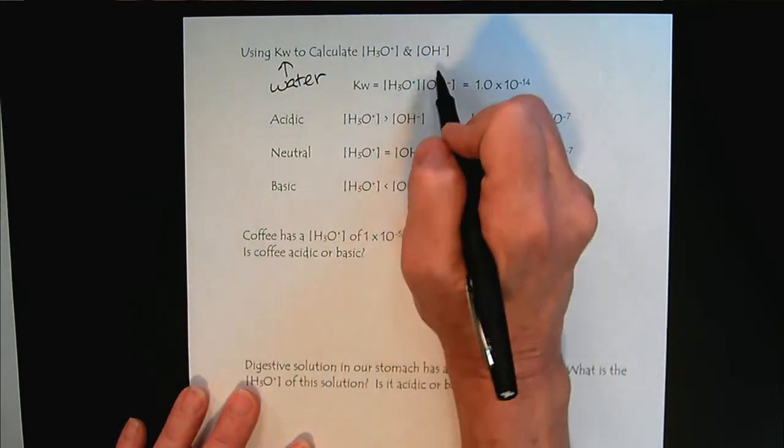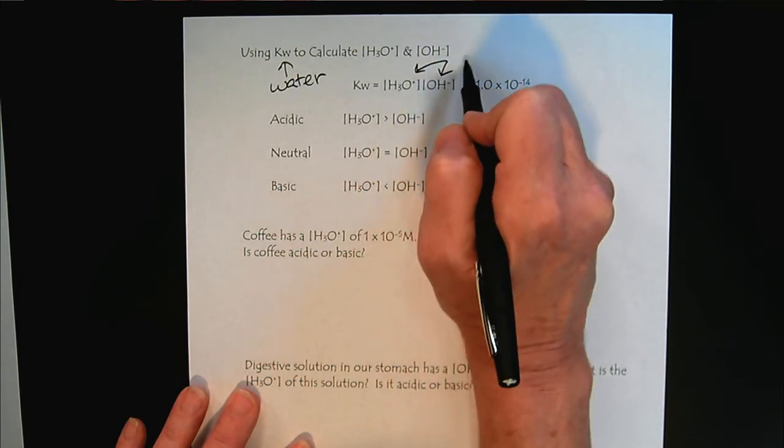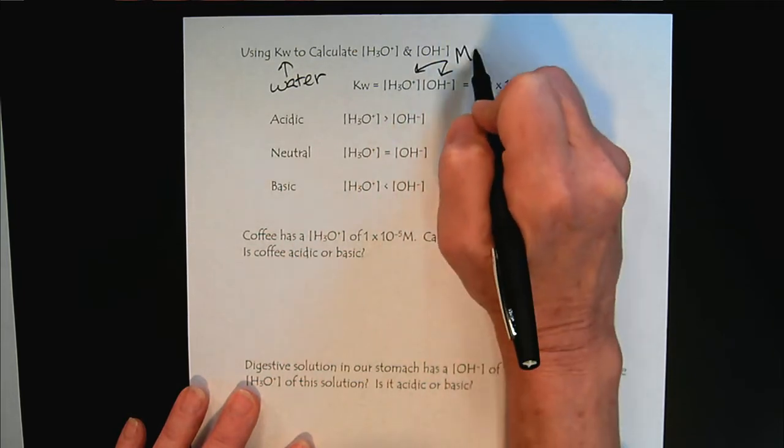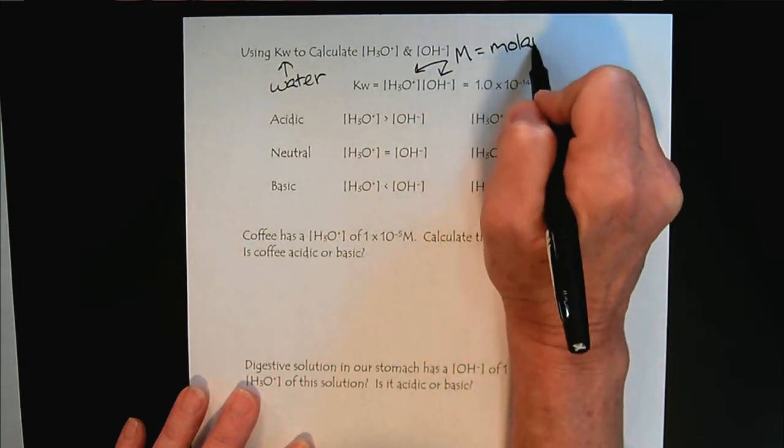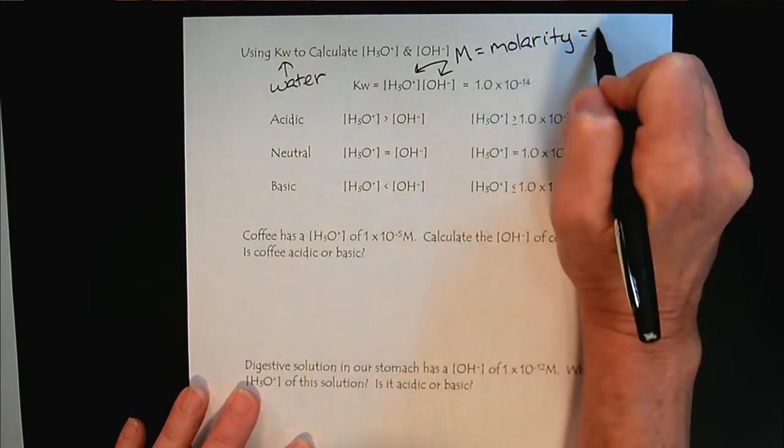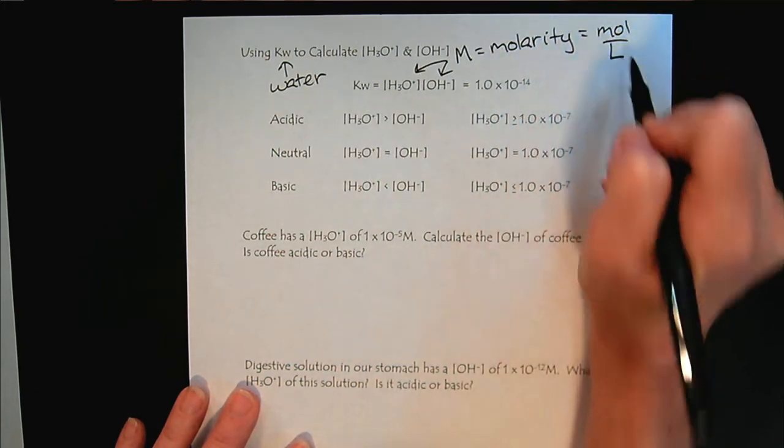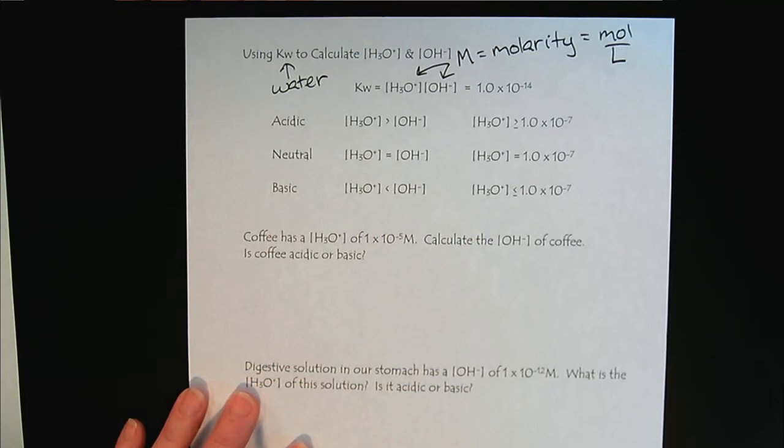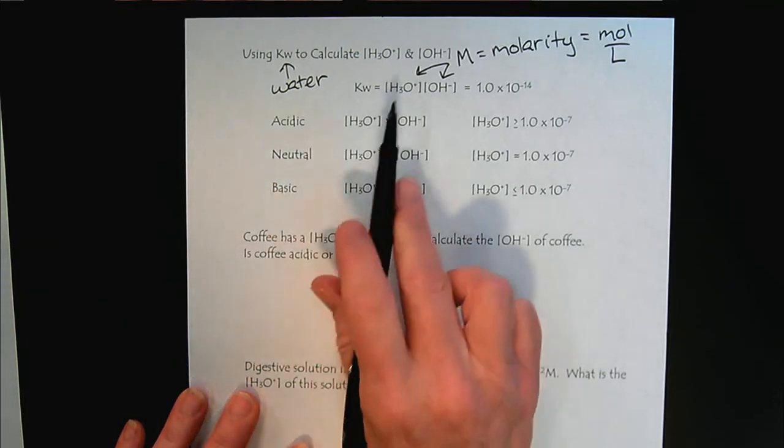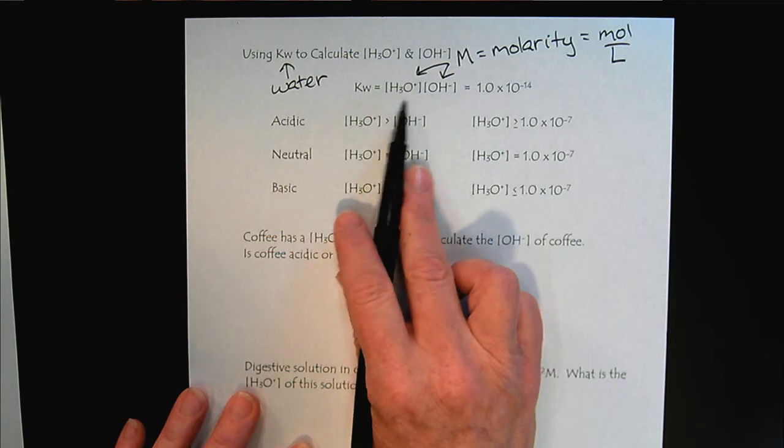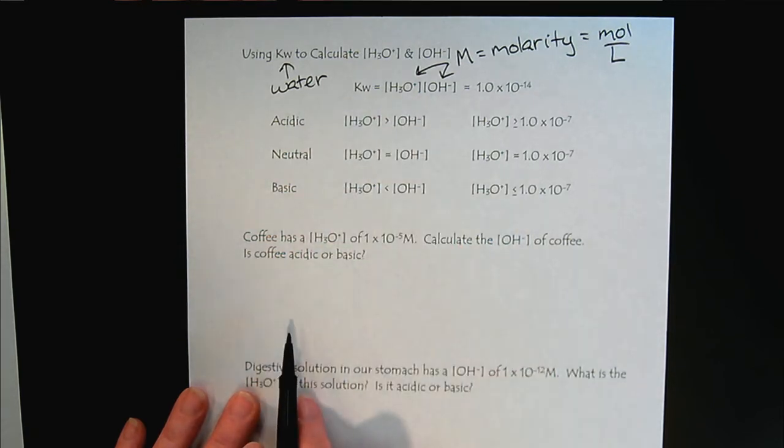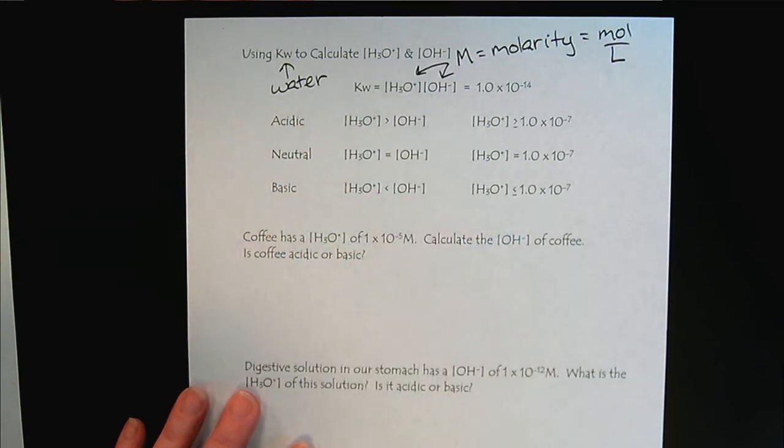So these concentrations, we report in M for molarity, remembering that that's moles per liter. So the units kind of slip away here, but it's important for you to be aware that if you're doing these type of calculations, you always do them with molarity.